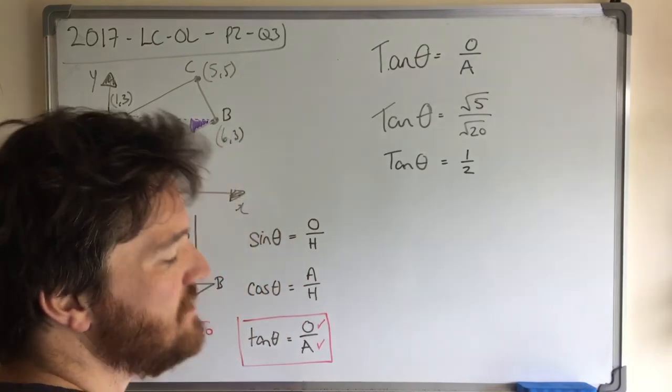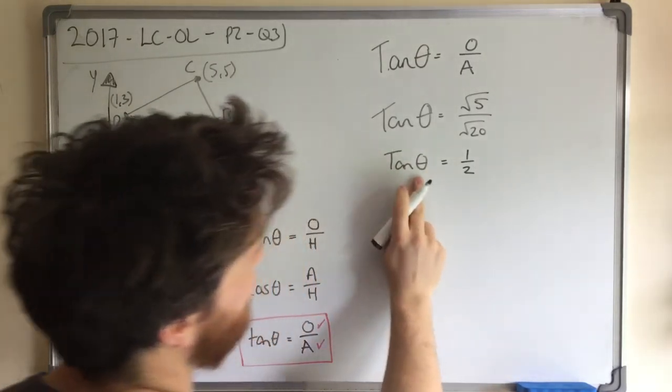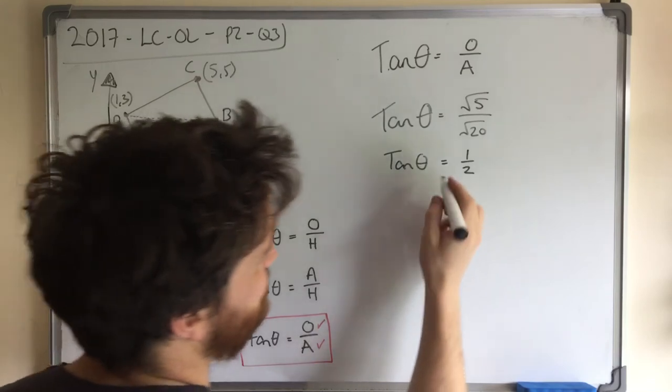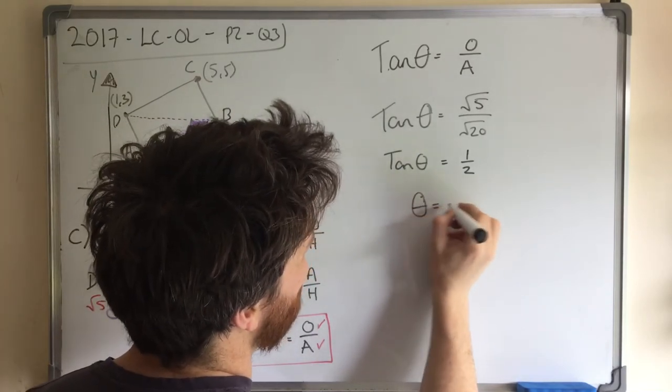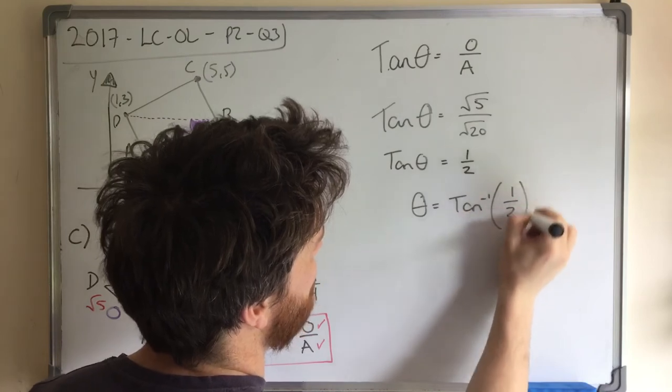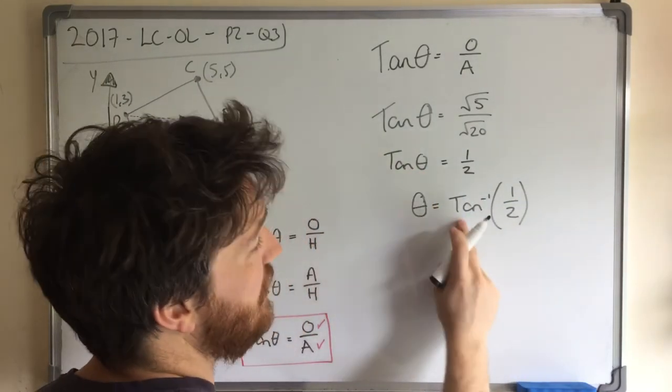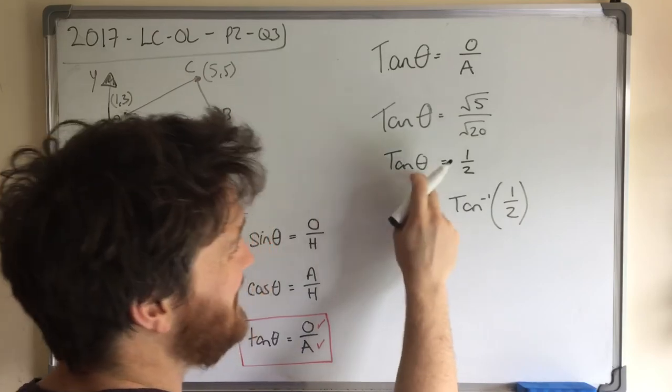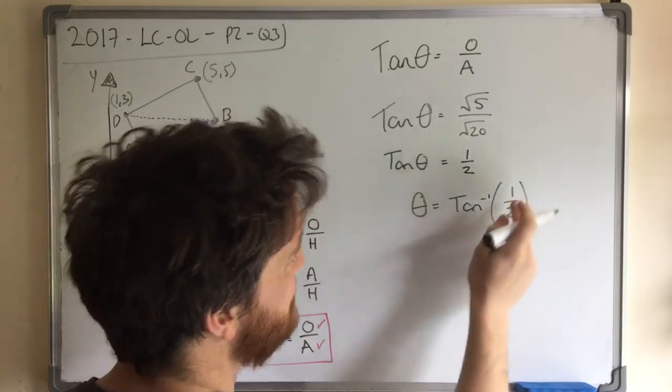Now they said find your answer to the nearest degree. How do I get rid of this tan part with the theta? And this is where we need to do the tan inverse of the other side. So if it was cosine theta, we would do the cos inverse of the other side. If it was sine theta, we'd do the sine inverse, but it's tan, so we do the tan inverse.